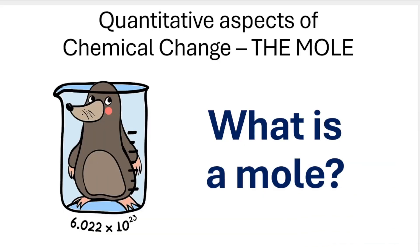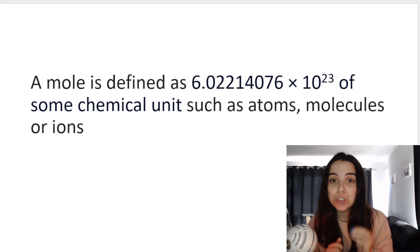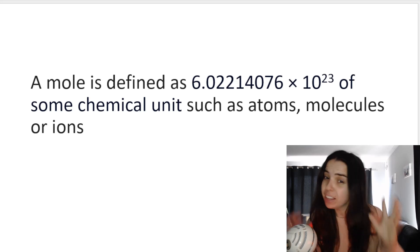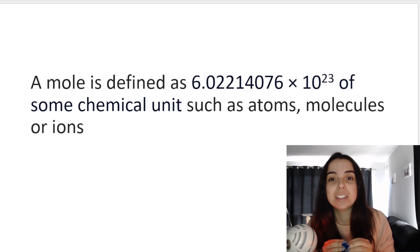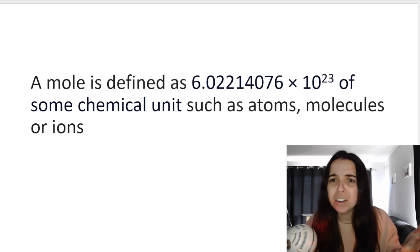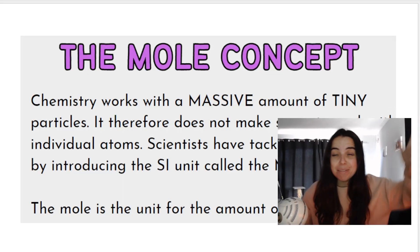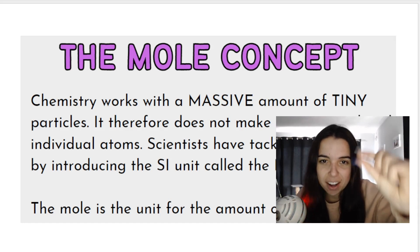A mole is defined as 6.022 times 10 to the power of 23. That's a huge number of some chemical units such as atoms, molecules, or ions. But what on earth does this mean? It's very important to understand that chemistry works with a massive, massive amount of tiny, tiny, tiny particles.